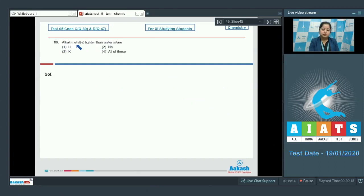Moving to the next question, alkali metals lighter than water is are lithium, sodium, potassium, or all of these? It is very clear that the density of all three elements—lithium, sodium, and potassium—are less than that of water.